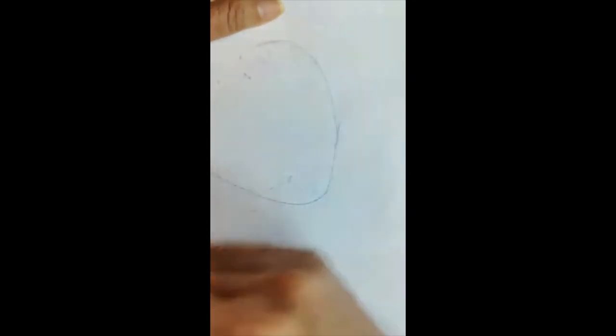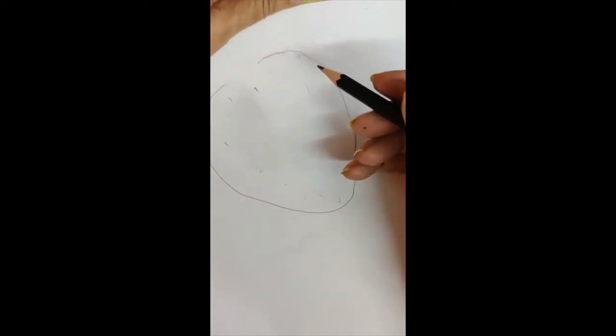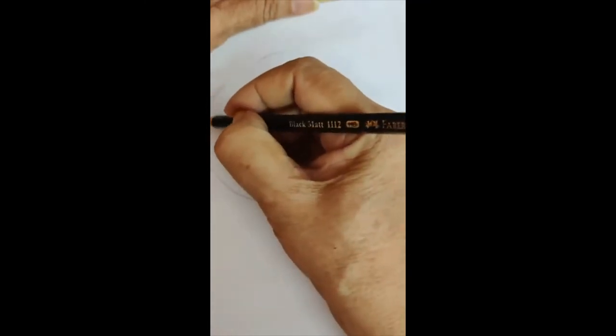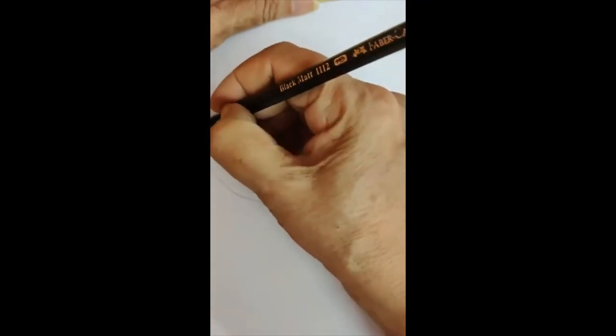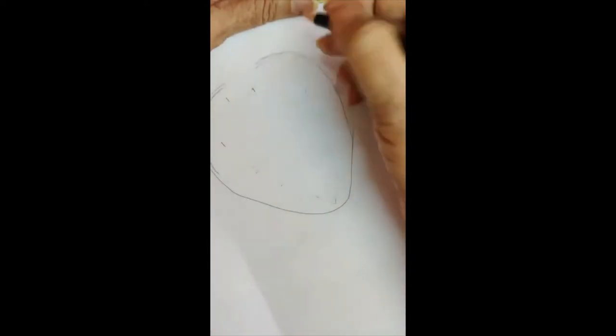Once you've got the shape of the heart, all you have to do is fill in the inner details. Now you know, children, that heart has two upper chambers called atria and two lower chambers called the ventricles. These two upper chambers are going to receive the veins.